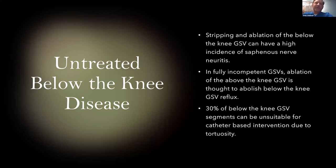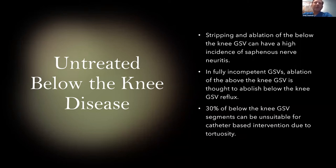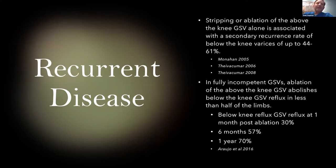A second scenario often encountered is patients who have had above-the-knee reflux treated but below-the-knee disease was left untreated. Why was below-the-knee reflux ignored? There's a high risk of saphenous nerve neuritis associated with below-knee GSV thermal ablation. Some doctors feel that below-the-knee disease will become clinically insignificant if above-the-knee disease is addressed. And it's estimated that one third of below-the-knee GSV segments are tortuous, thus not suitable for traditional thermal modalities. Leaving behind below-the-knee incompetent GSV segments more often than not results in recurrent varicosities. Treating above-the-knee disease only clinically suppresses below-the-knee reflux in less than half of limbs with a fully incompetent GSV.